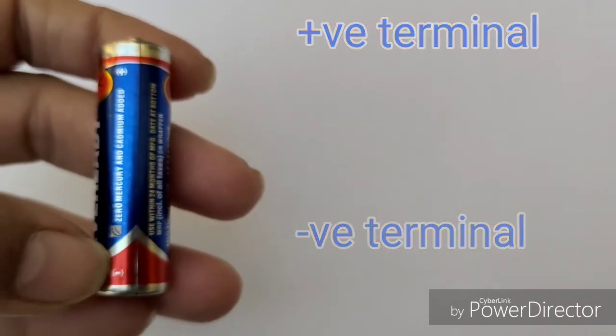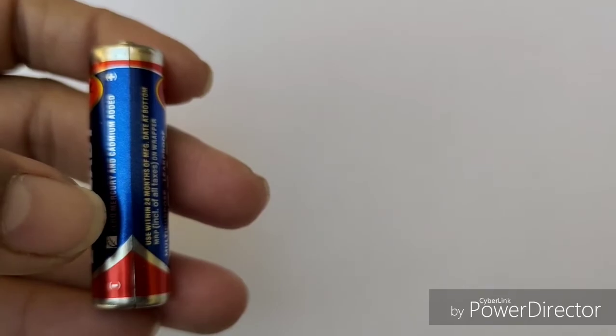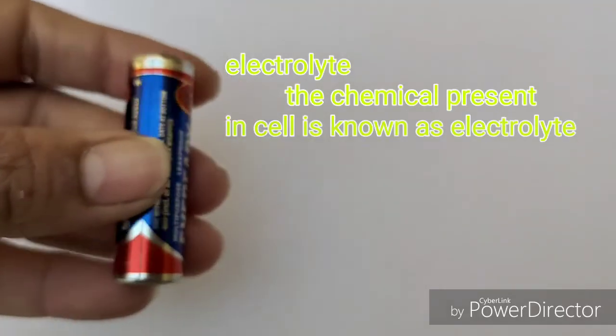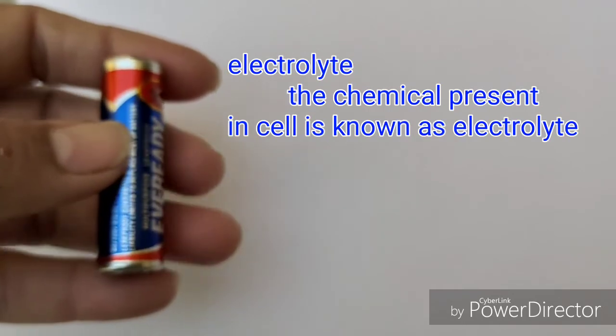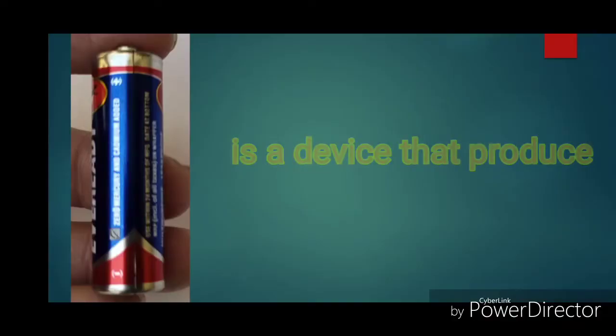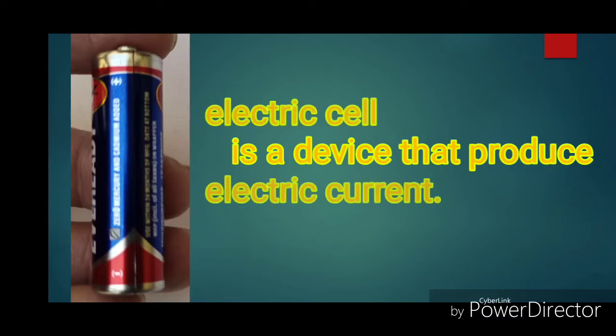The chemicals present in cells are known as electrolyte. So an electric cell is a device that produces electric current.